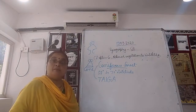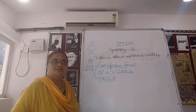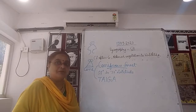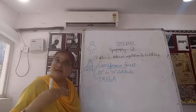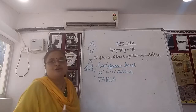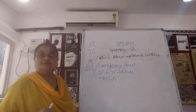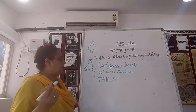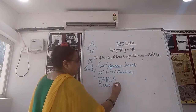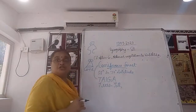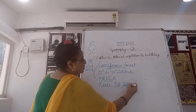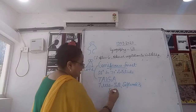In higher altitudes — in the Himalayas — these kinds of forests are found in abundance. The major features of this kind of forest are: trees are tall — very high trees — and the wood is softwood, not hard. And they are evergreen.